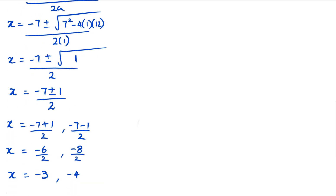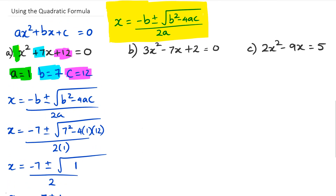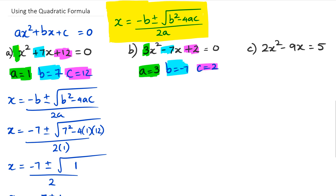Moving on to the next question, we're going to do the same thing again — write down what our a, b, and c are. So a in this case is equal to three, b is equal to negative seven, and c is equal to two. I'm getting the three from the coefficient of x squared, negative seven as the value for b, and positive two as our c value. Once again, we're going to substitute it into our formula.